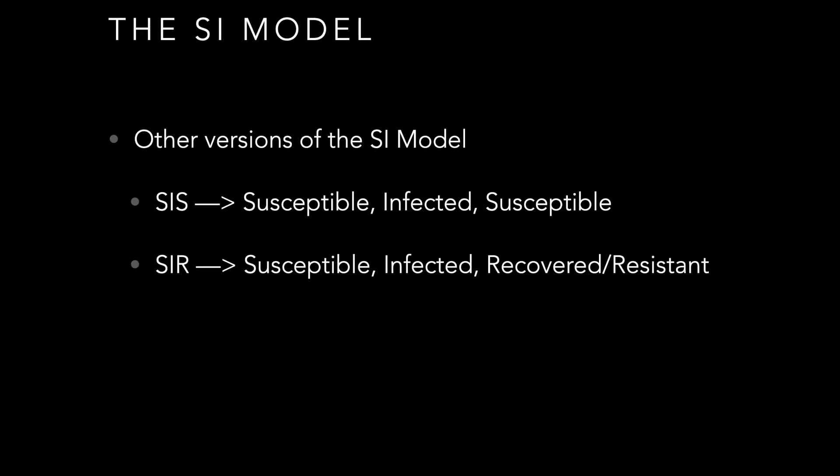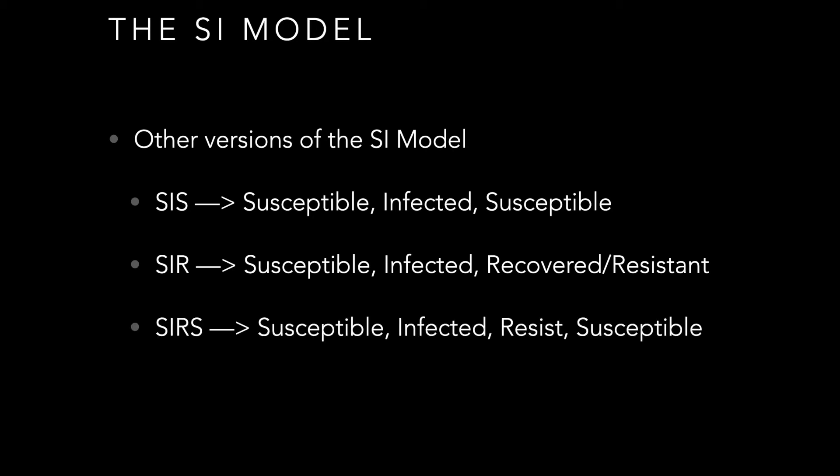There's the SIR model — susceptible, infected, recovered — where once infected, after some contagious period, you transition to a recovered or resistant state where you cannot get the infection again. Many diseases fit this model. There's also the SIRS model — susceptible, infected, resistant, then back to susceptible — which is potentially where COVID-19 fits, where once infected and recovered you become resistant for some period, then transition back to susceptible.